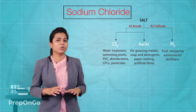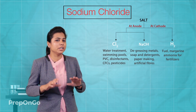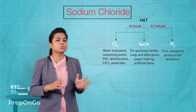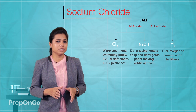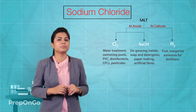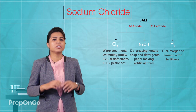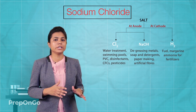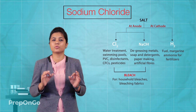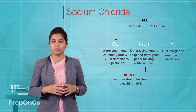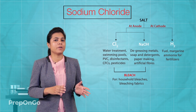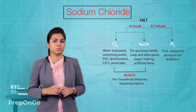Sodium hydroxide is used in degreasing of metals, in soaps and detergents, paper making, and manufacturing of fabrics. Sodium hydroxide and chlorine combine together to form bleaching powder, which acts as a cleansing agent for fabrics and the household.